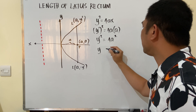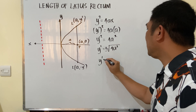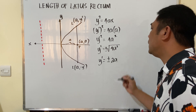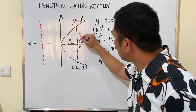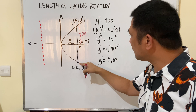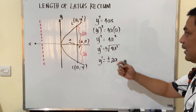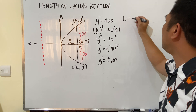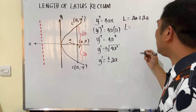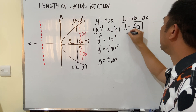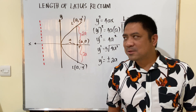Therefore y' = ±2a. That means the distance from the focus to each endpoint of the latus rectum is 2a. So the total length of the latus rectum is 2a + 2a = 4a. This is how we derive the formula for the latus rectum.